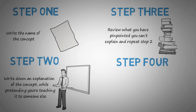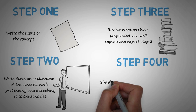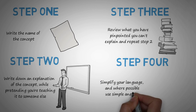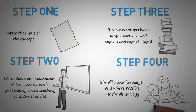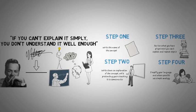Step 4: If you are using overly wordy or confusing language, try again so you can filter the content. Simplify your language and where possible, use simple analogy. If your explanation ends up being confusing, you probably don't understand it well enough and should start again. You should make it so simple a 5-year-old could understand it. That's it — a simple and powerful technique to ensure you can rapidly learn and retain new concepts and information.